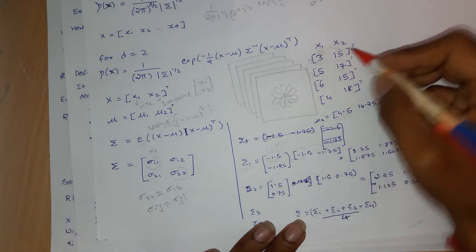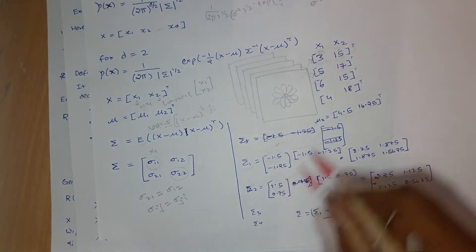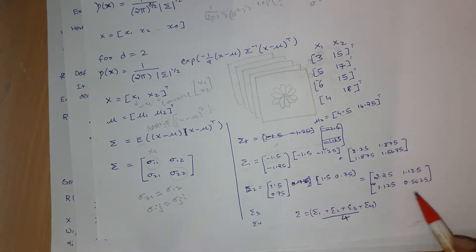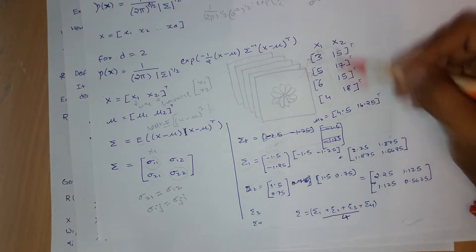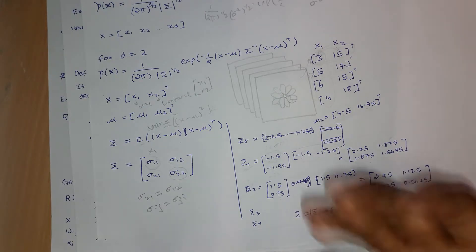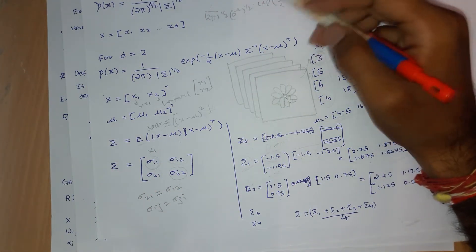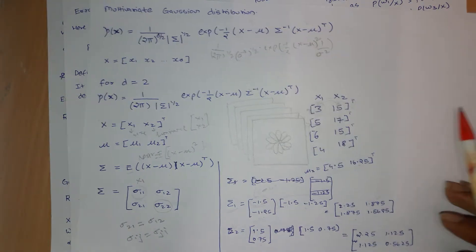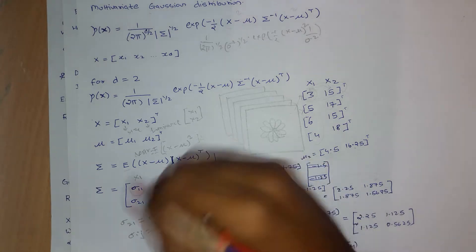We compute sigma for each sample vector by subtracting the mean — for example, [3−4.5, 15−16.25] = [−1.5, −1.25] — then multiply by its transpose to get the per-sample covariance matrix. The overall covariance matrix is the average: sigma1 plus sigma2 plus sigma3 plus sigma4 divided by 4. This mu and sigma are what we use in the Gaussian distribution.